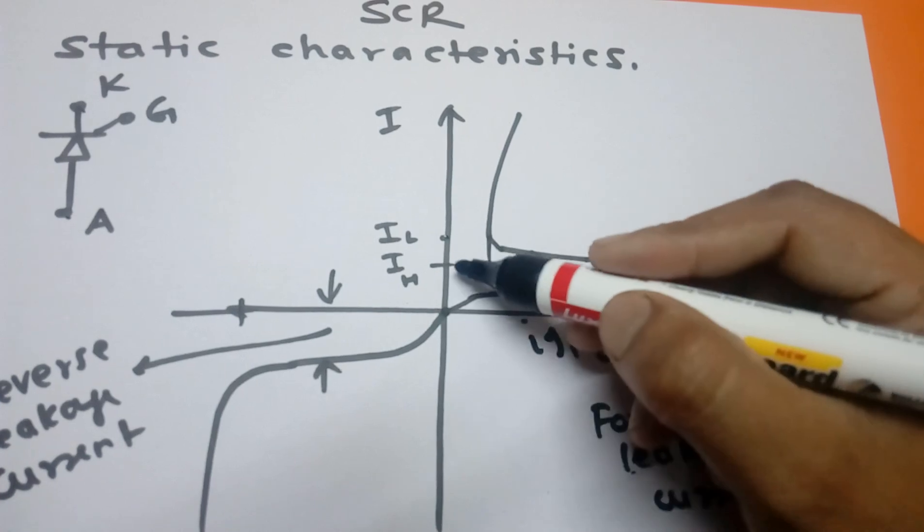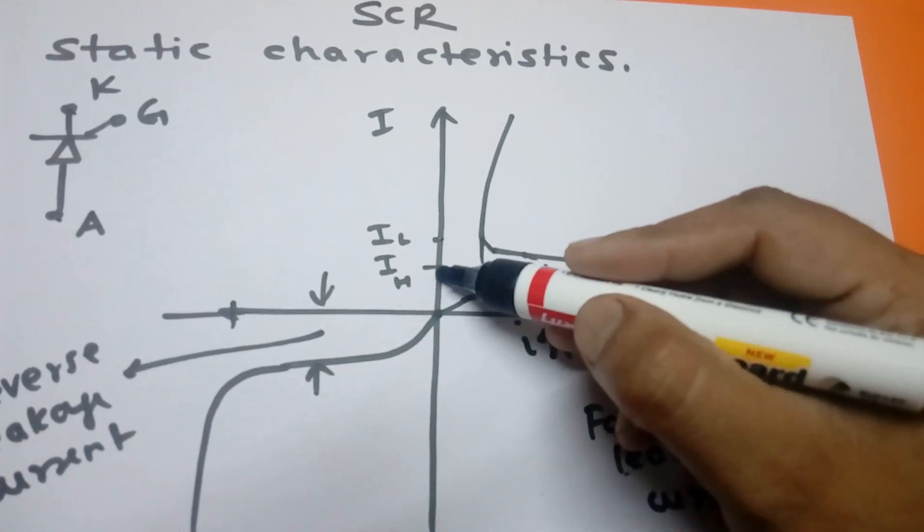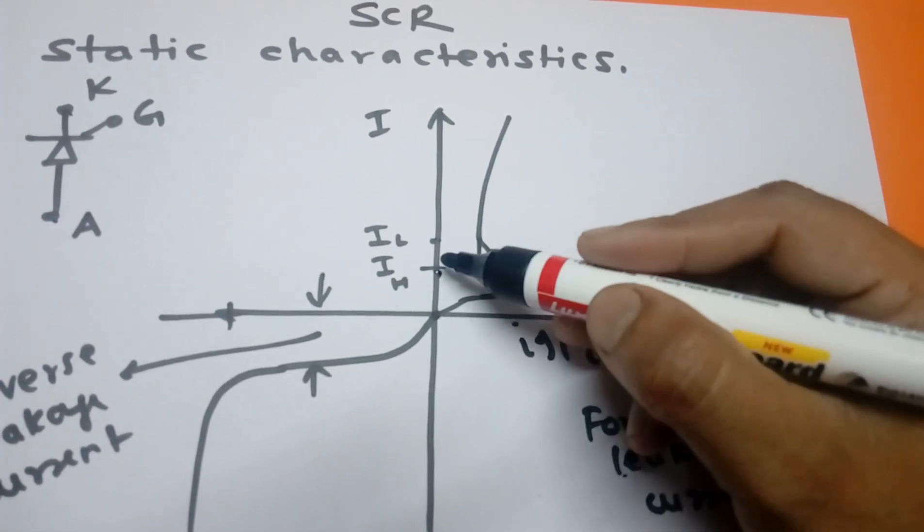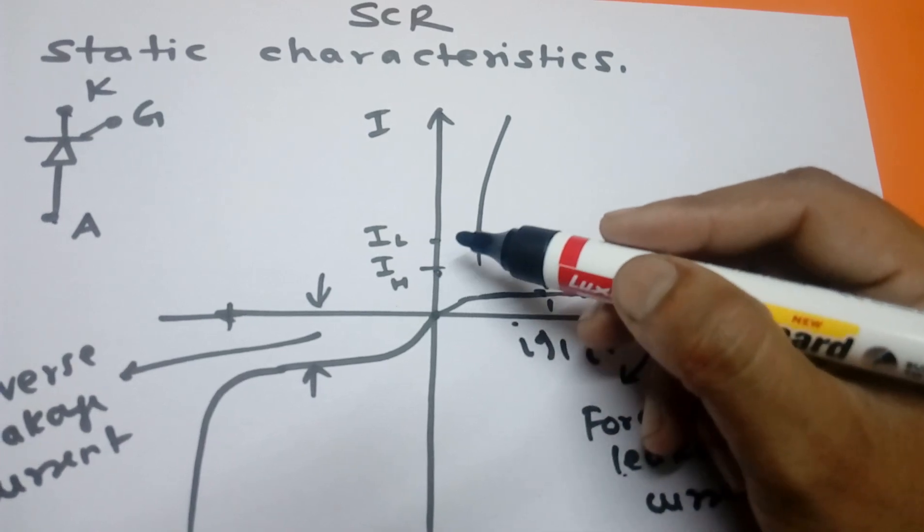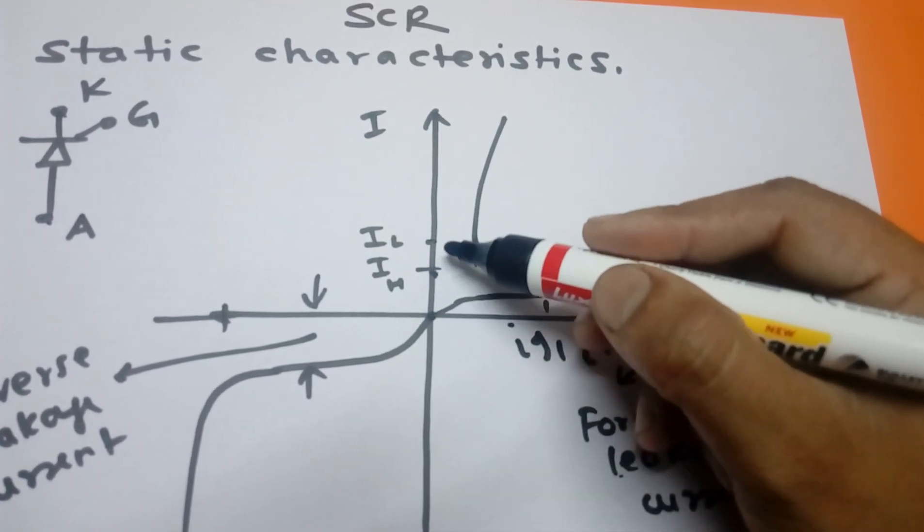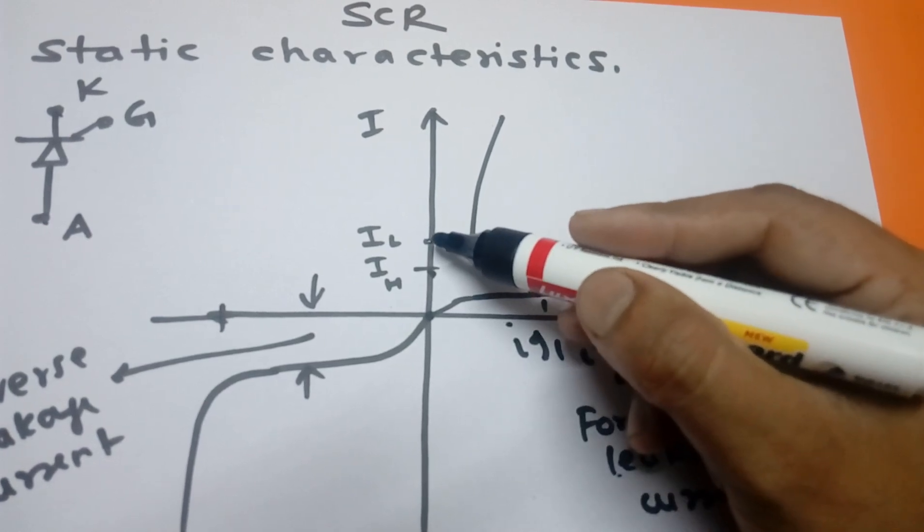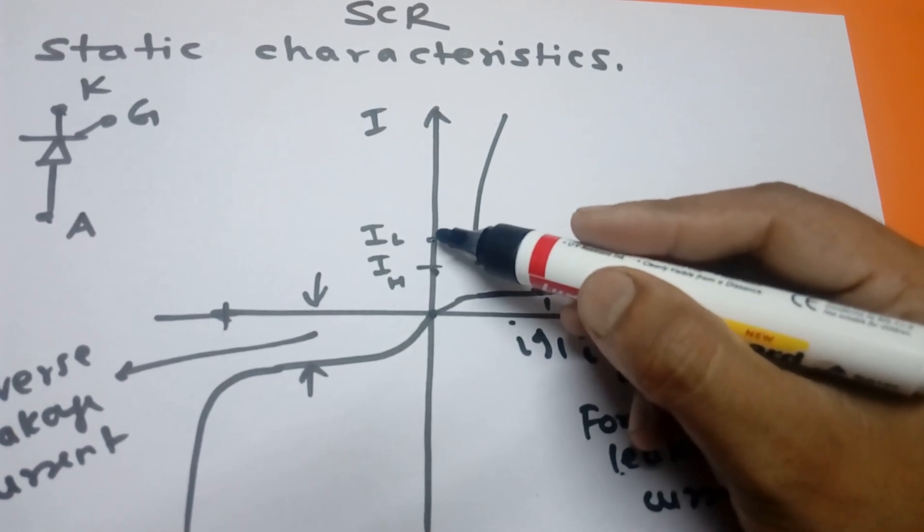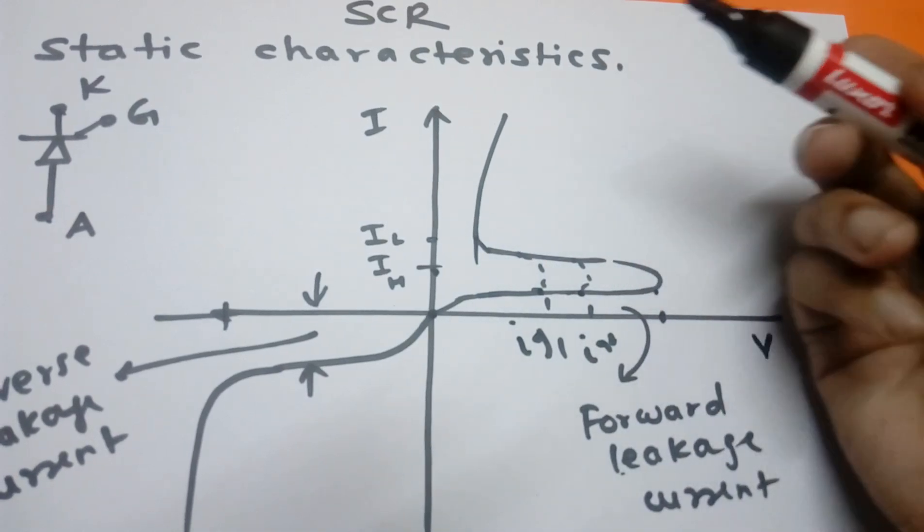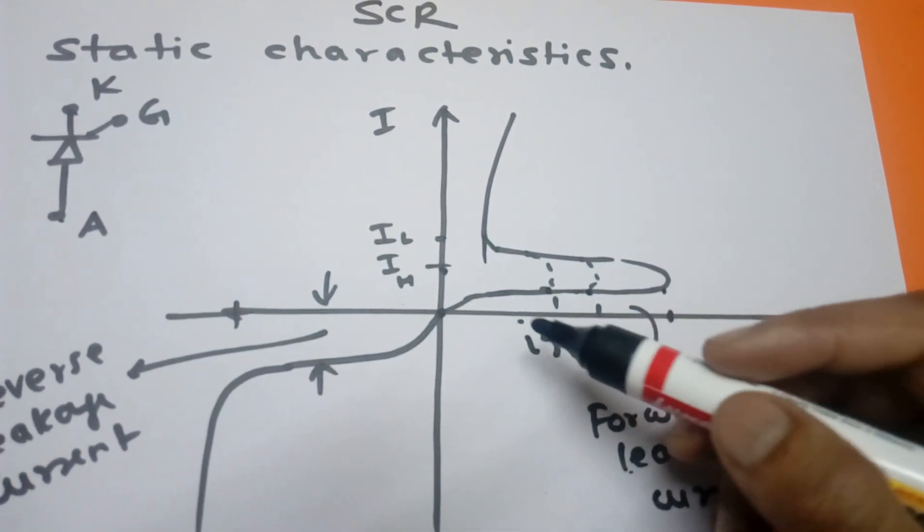There are two points: one is IL and one is IH. IH is the holding current, defined as the minimum anode current below which the thyristor will turn off. Latching current IL is the required amount of anode current to turn on the device. This is all about the static characteristic of SCR.